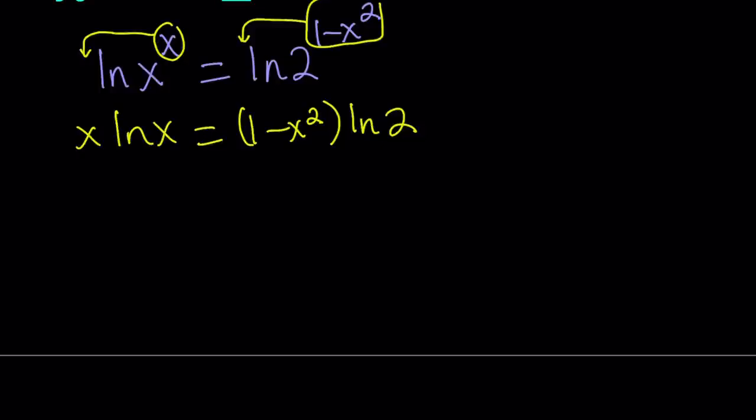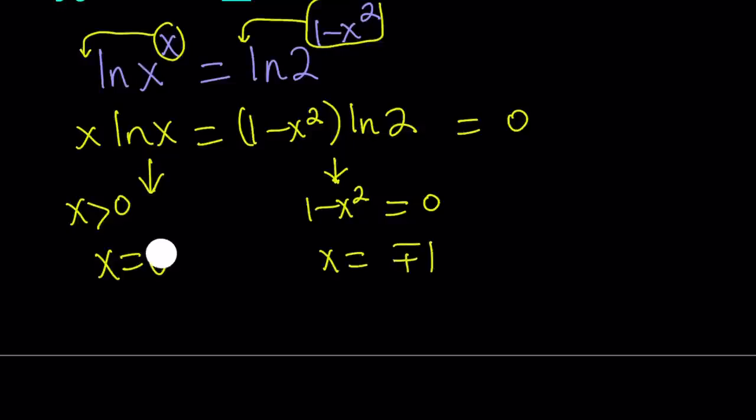Now, for example, one thing you can do is set both sides equal to 0. The left-hand side says x must be positive because of ln. And in order for that product to equal 0, x must be 1 because ln 1 equals 0. The right-hand side says, in order for that to be 0, 1 minus x squared needs to be 0. This means x equals plus minus 1.